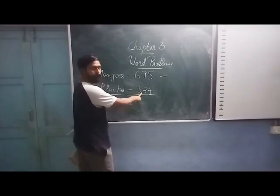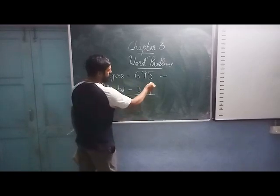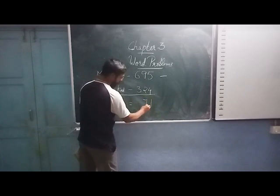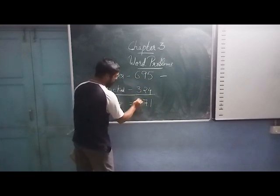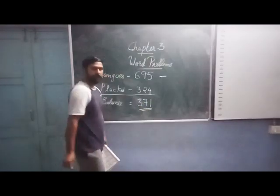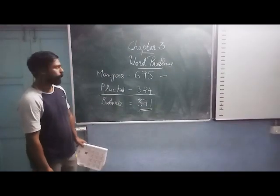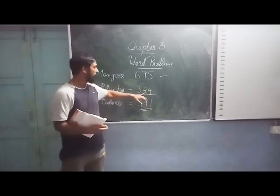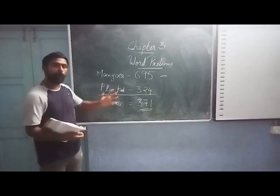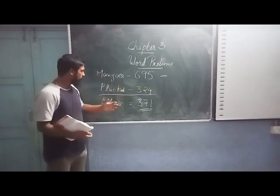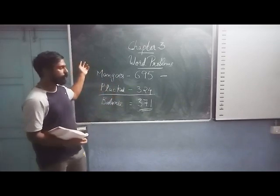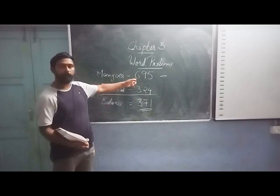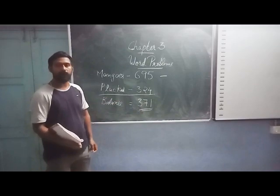We subtract the mangoes that were plucked from the total mangoes. So: 4 minus 5 — you get 1; then 9 minus 2 — you get 7; then 6 minus 3 — you get 3. So you get 371 mangoes left in the orchard. There were initially 695 mangoes in the garden, somebody came and plucked 324, and now the question is how many mangoes are left. To find the balance mangoes, we use subtraction: 695 minus 324 equals 371. This is the balance mangoes in the orchard.